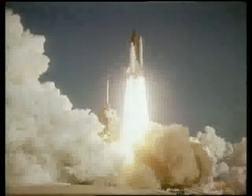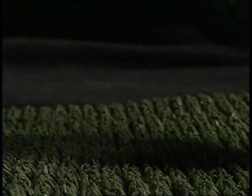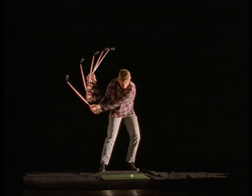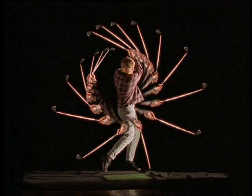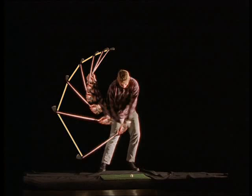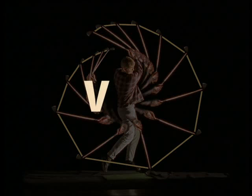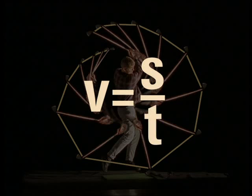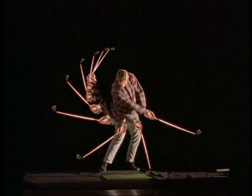Very few things travel at constant speed. Most are either getting faster or slowing down. During this golf swing, the speed of the club is changing. Freeze the action every 20th of a second, and the distance traveled by the club head varies. The time interval stays the same, but the distance traveled increases and then decreases. Speed is distance moved divided by time taken. If the time interval stays the same, but the distance traveled changes, the speed must be changing too.